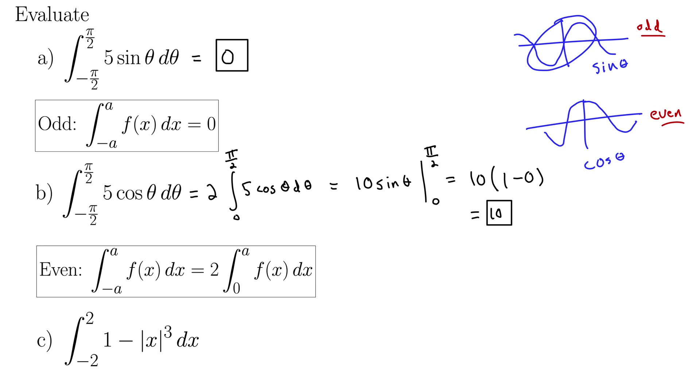Let's take a look at part C. We have the integral from negative two to two of one minus the absolute value of x cubed. Is this function even or odd? It is indeed even because if we plug in f of negative x for this, we get one minus the absolute value of negative x quantity cubed.